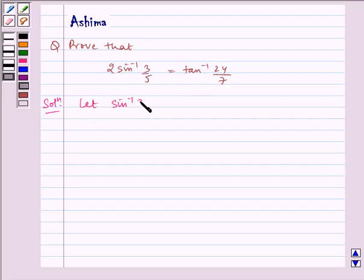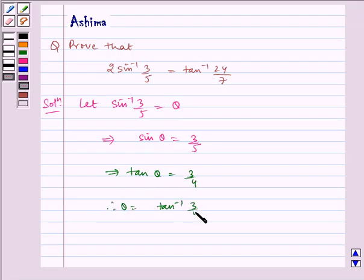Let sin inverse 3 by 5 equal theta, which implies sin theta equals 3 by 5, which implies tan theta equals 3 by 4. Therefore theta equals tan inverse of 3 by 4.